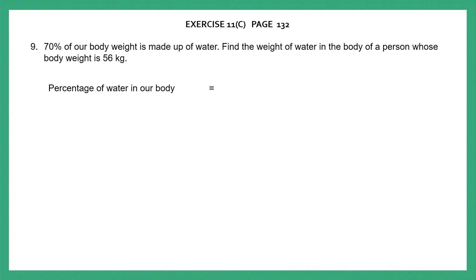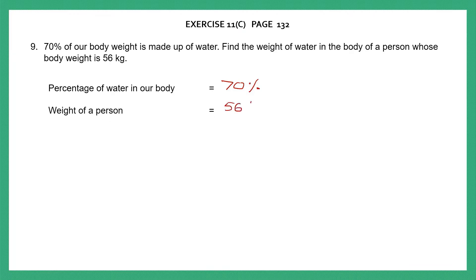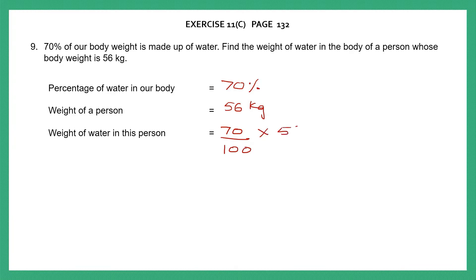The percentage of water in our body is 70%. The weight of the person given to us is 56 kg. What are we asked to find out? The weight of water in this person. So let's start with 70 by 100 and then we multiply this with the weight of the person, 56 kg.